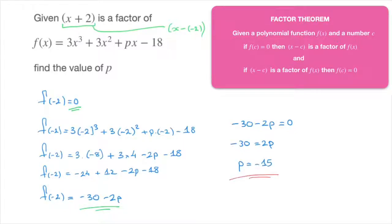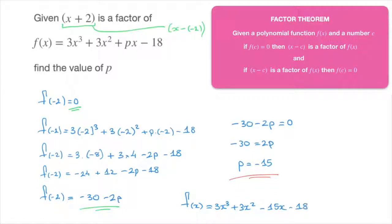And we're done — we've just found the value of p. If needs be, we can rewrite our polynomial function as f of x equals 3x to the power of 3 plus 3x squared minus 15x minus 18. That's how we solve one of the common exam-type questions involving the factor theorem, and that's it for this tutorial.